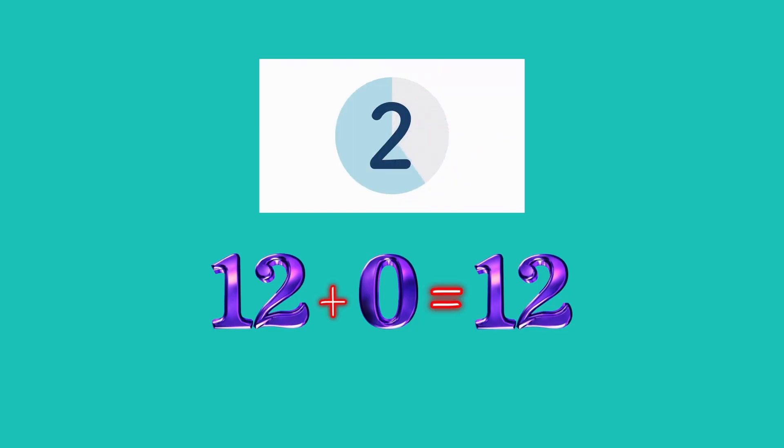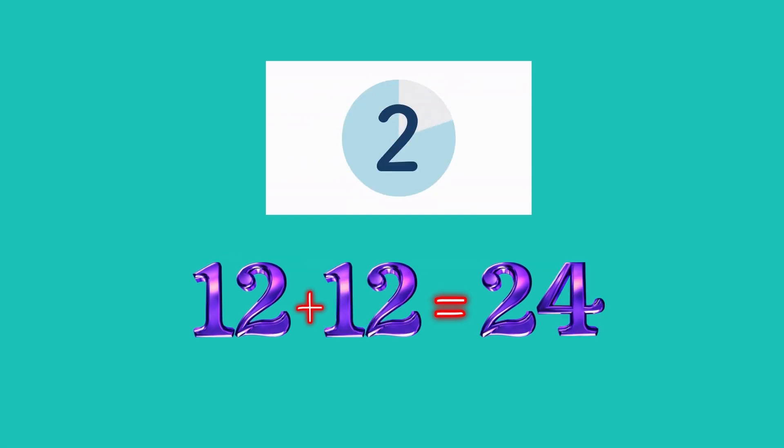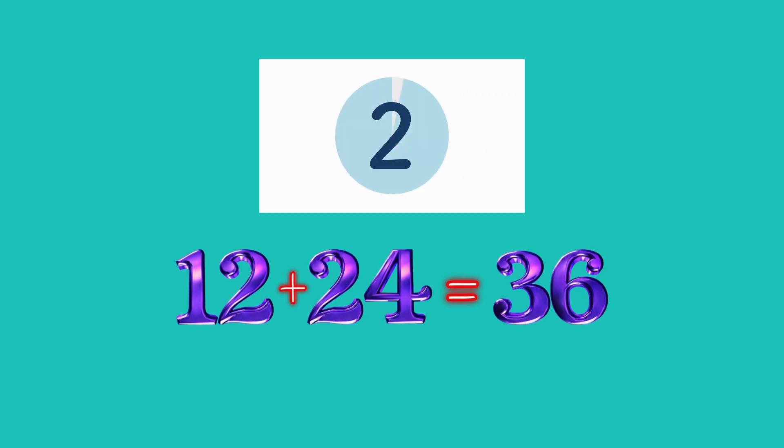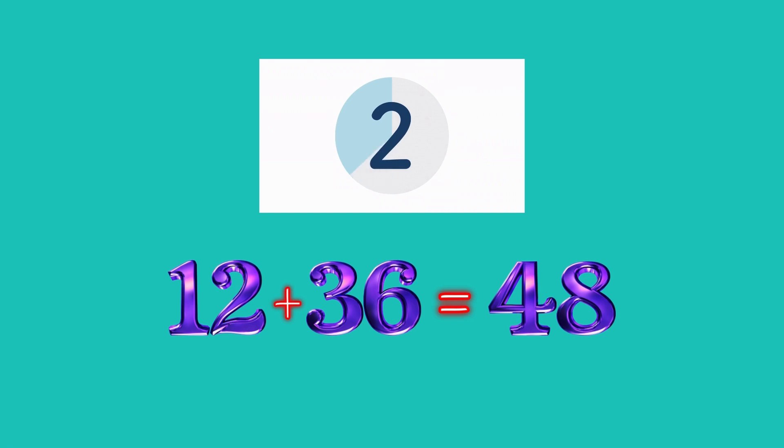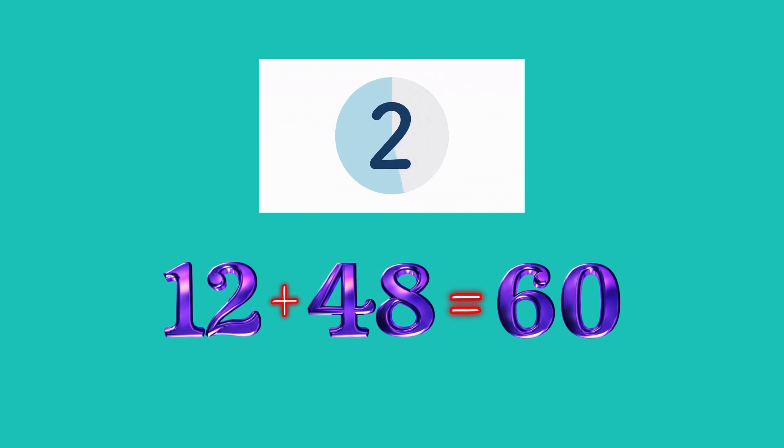12 plus 0 equals what friends? 12, good job. 12 plus 12 is what? 24, good. 12 plus 24 equals what friends? 36. 12 plus 36 is what friends? 48, good. 12 plus 48 equals what? 60, good job.